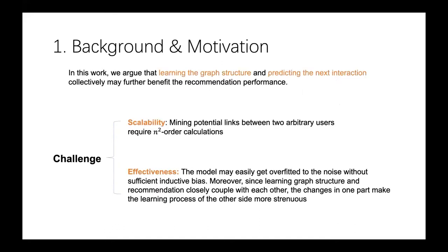To this end, we argue that learning the graph structure and predicting the next interaction collectively may further benefit the recommendation performance. To achieve this goal, we need to address two notable challenges. First, the scalability issue. Mining potential links among users requires n-squared order calculations, where n is the number of user nodes in the graph.